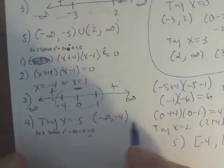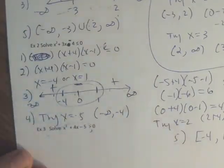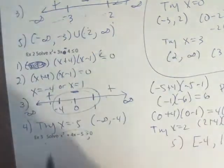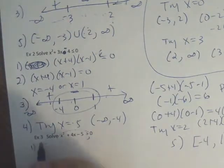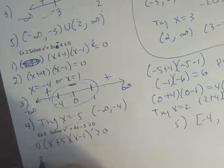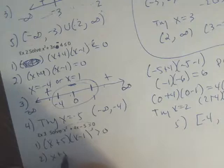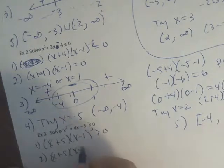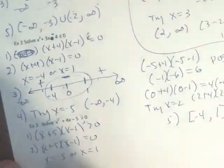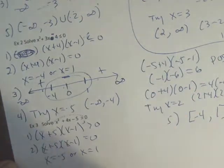The last example: I factor first to get x plus 5 times x minus 1, greater than 0. Step two: solve for equal to 0 — x is negative 5 or x is 1. Step three: create intervals on the number line.